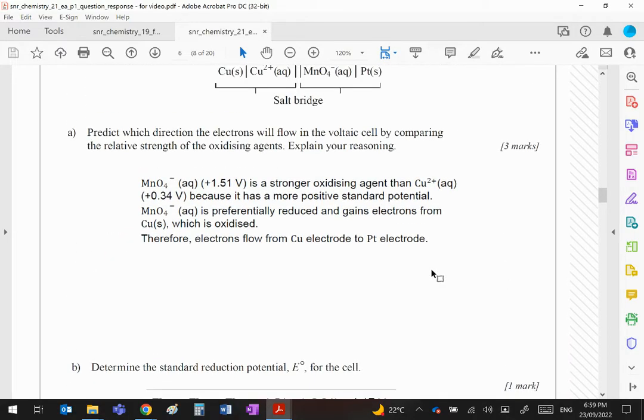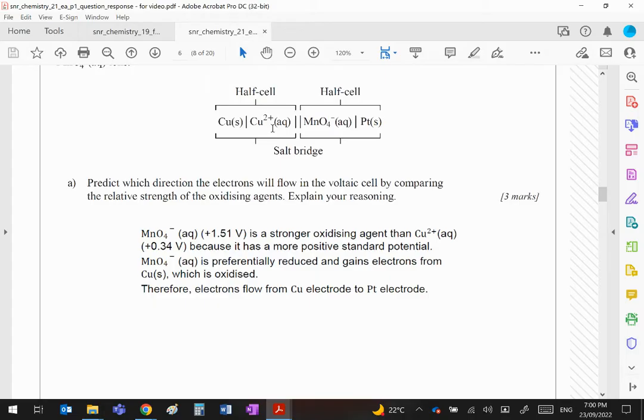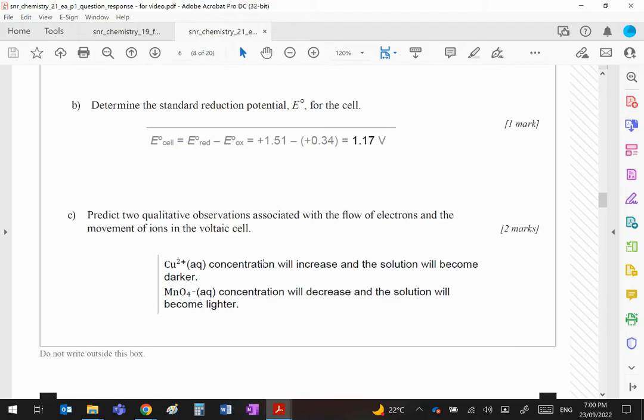What would you see? Well if copper is becoming copper ions, copper ions are blue, so therefore the blue color will get darker in that half cell. In the other half cell, manganate will become Mn2+. Manganate is a dark purple ion and Mn2+ is a very pale pink, so this half cell will effectively get lighter in color. This will get darker, this will get lighter.